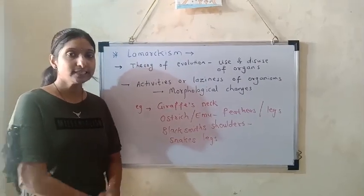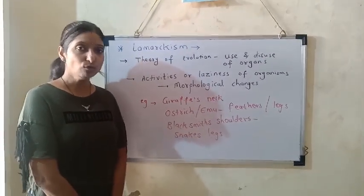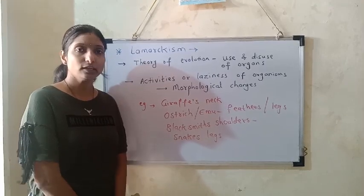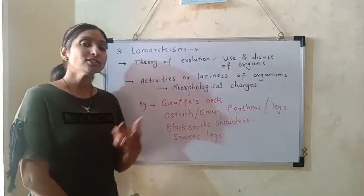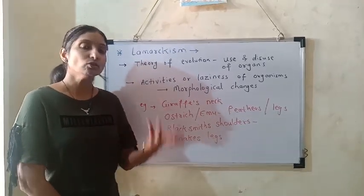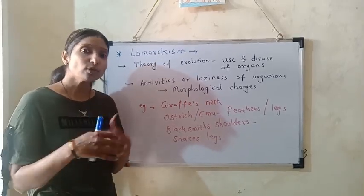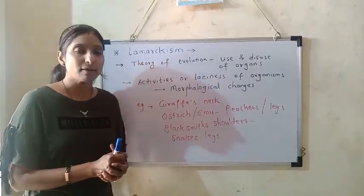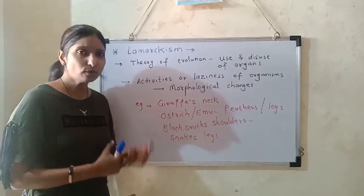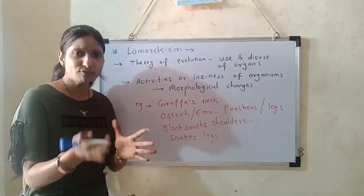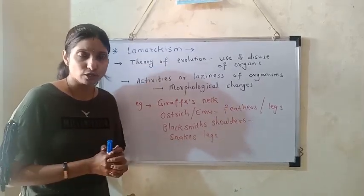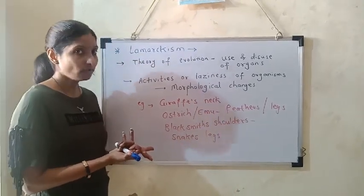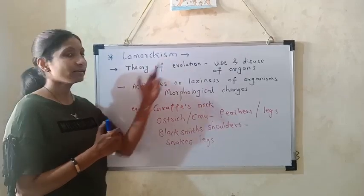I hope you understood the six evidences for the theory of evolution of different living organisms on planet Earth. Now there are two scientists who also gave theories explaining the process of evolution: the first is Darwin and the second is Lamarck. Lamarck's theory of evolution is called Lamarckism.